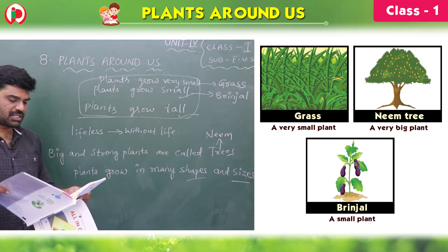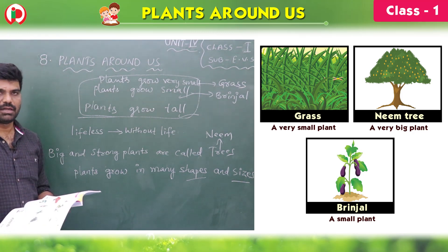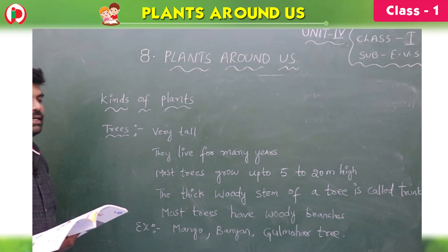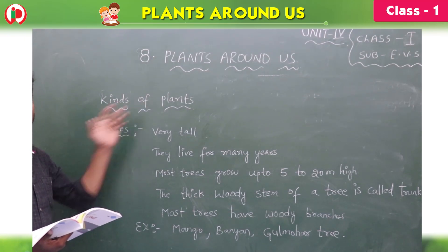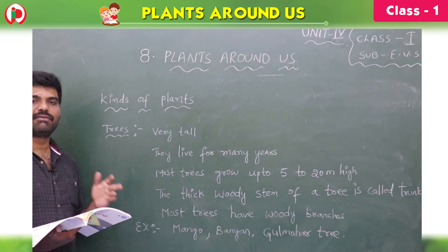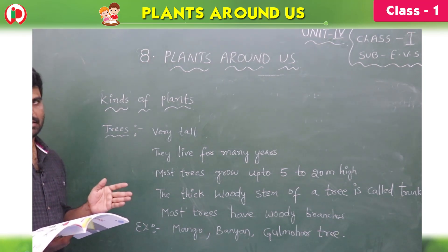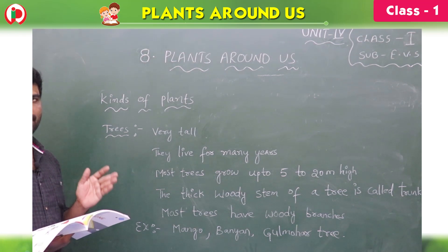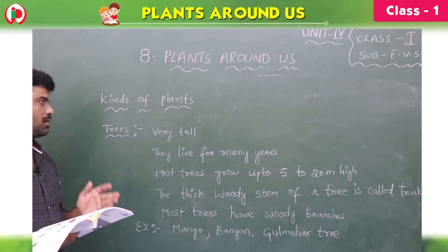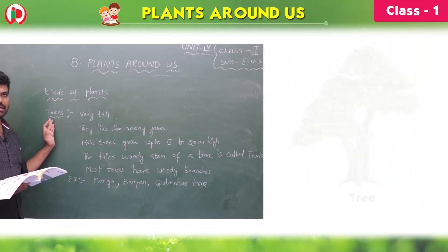Take page number 34, children. Now see the kinds of plants. We know that plants are of different kinds depending upon their sizes — some are big, some are very big, some are small, some are very small. The first kind is trees.